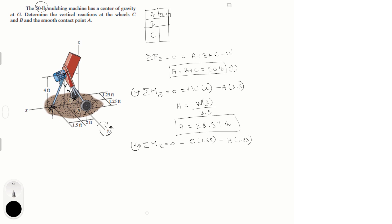Now, C is negative because it's trying to turn the X axis clockwise and B is positive because it's trying to turn it counterclockwise. So, this means that C is equal to B because they're both 1.25 and there's nothing else.